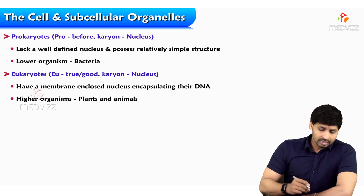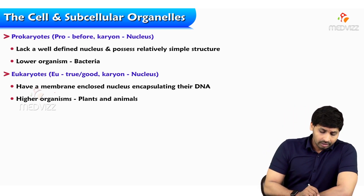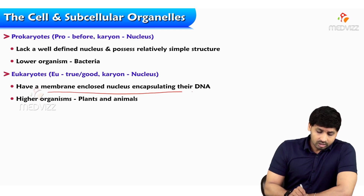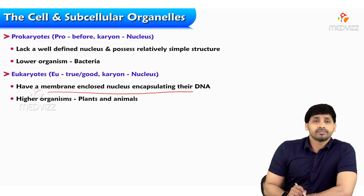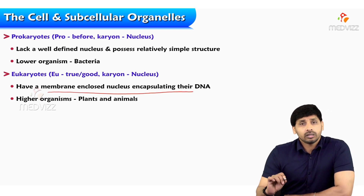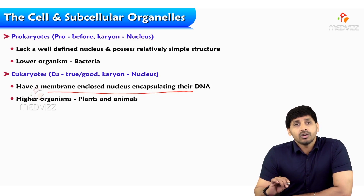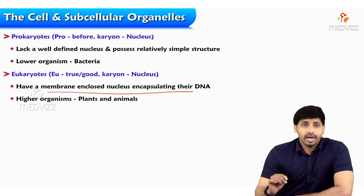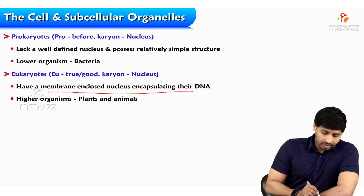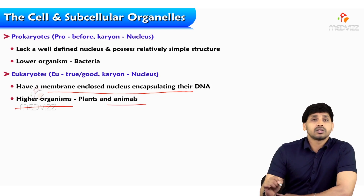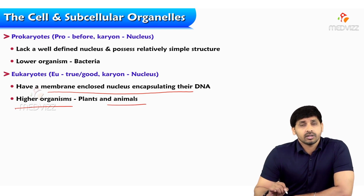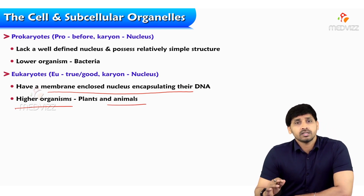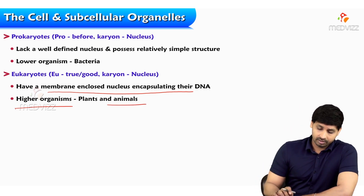Eukaryotes, as mentioned, are enclosed by a membrane — that is the nucleolus. They are found in higher organisms like animals; this eukaryotic cell is present in human beings and animals.